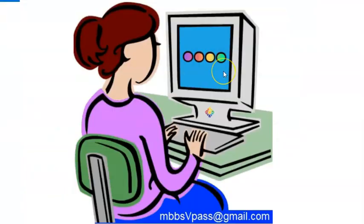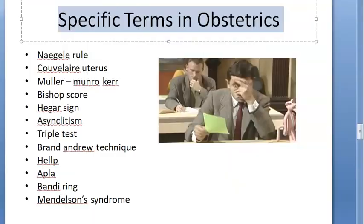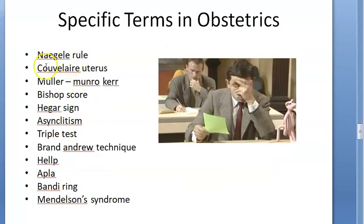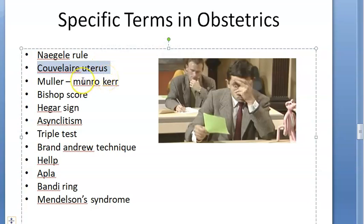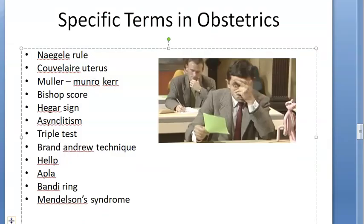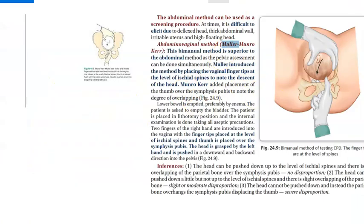Specific terms in obstetrics: the examiners will not always ask straightforward topics - they may ask specific terms that give you no clue about which topic they're from. You should know: Naegele's rule - how to calculate estimated delivery date by adding nine months and seven days. Couvelaire uterus - a severe form of concealed abruption placentae where blood enters the wall of the uterus. Müller-Mundrocker test - a test for checking cephalopelvic disproportion.